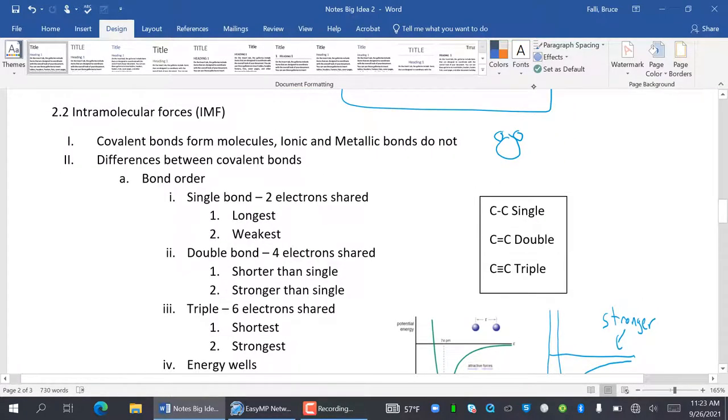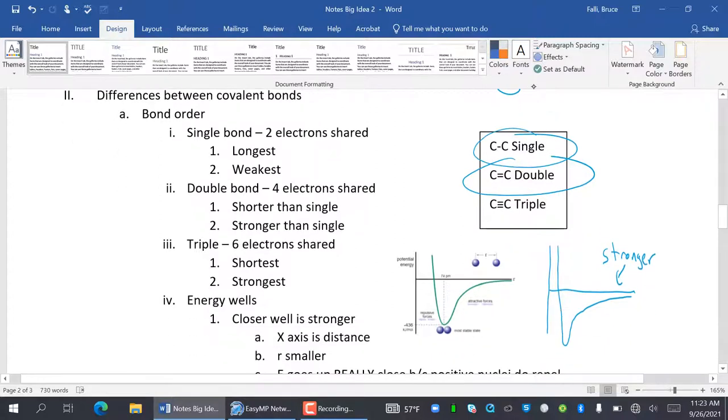So covalent bonds. So different covalent bonds have different strengths. First is bond order. If you have a single bond, there's two electrons shared like this. It's the longest and the weakest. Double has four. Remember, each line here would represent a pair. So four miles triple is shorter and stronger. So notice short equals strong. Long equals weak.